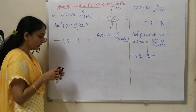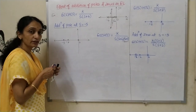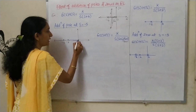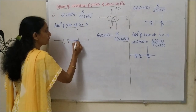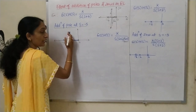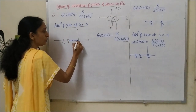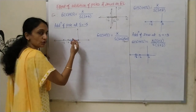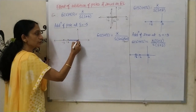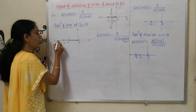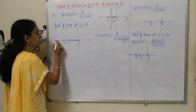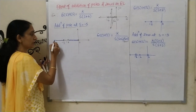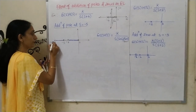Now I need to calculate the region on root locus. This will be part of the region because when I consider a test point, the number of poles and zeros to the right-hand side is odd. So this is also the region on root locus up to infinity.